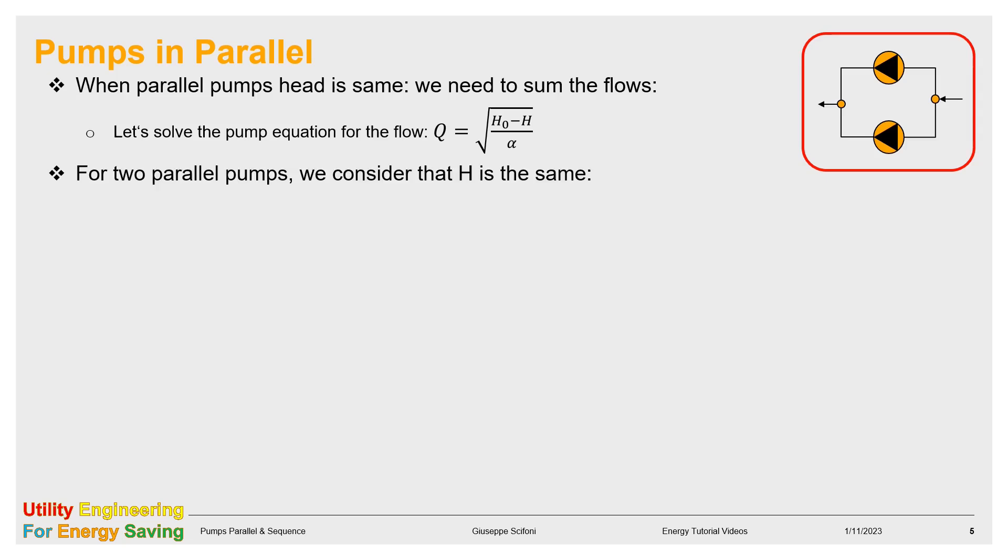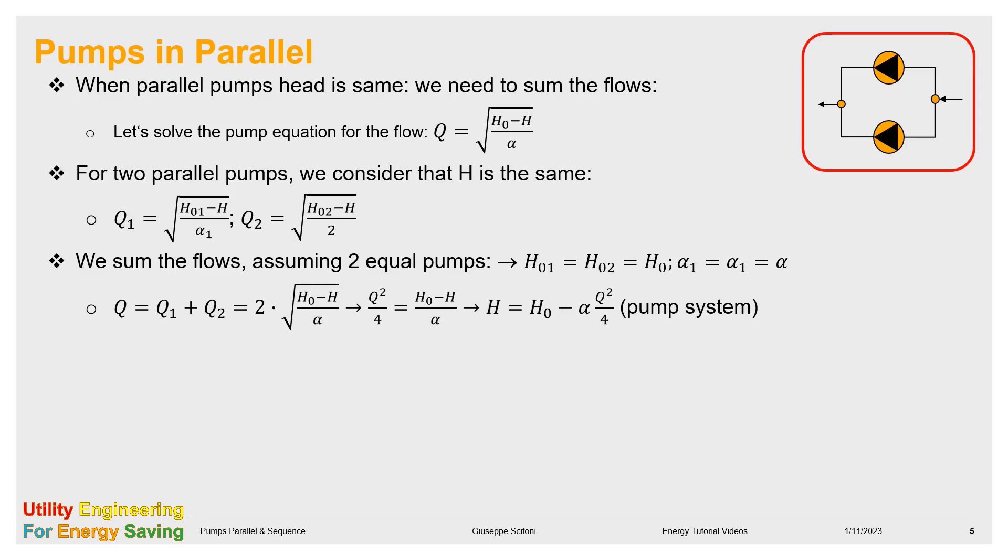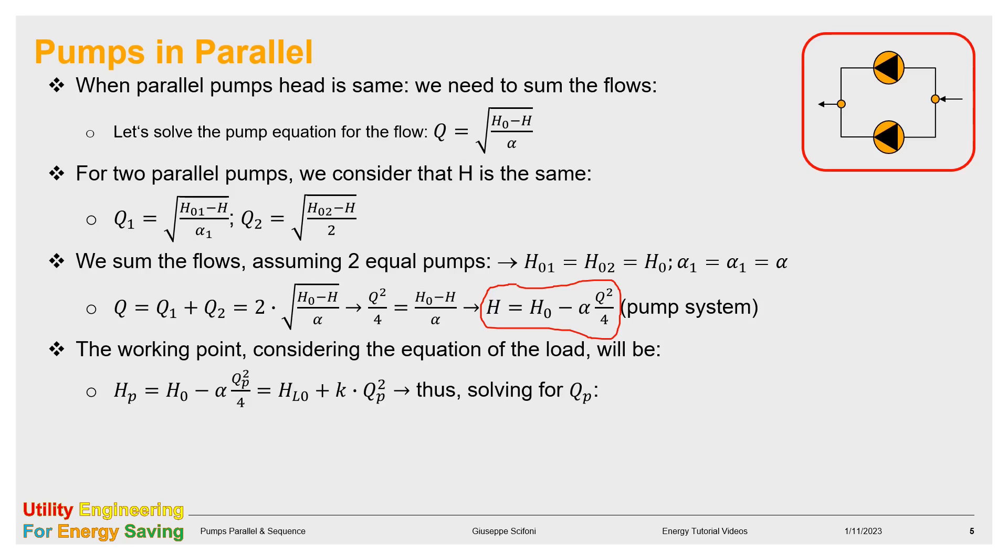Being two parallel pumps, then we write the same equation twice. If the pumps are equal, the subscript becomes the same. Adding the flows means to duplicate them. Now, we solve the equation for H back, and we obtain the expression of the pump system. The working point, as seen for the sequence operation, is found by the intersection of the load curve with the new pump system curve. The expression of QP and HP, the flow and the head for the parallel, are displayed in red. That is the case of two equal pumps, as said. Should be N equal pumps, the expression of QP becomes the one at the very last row.